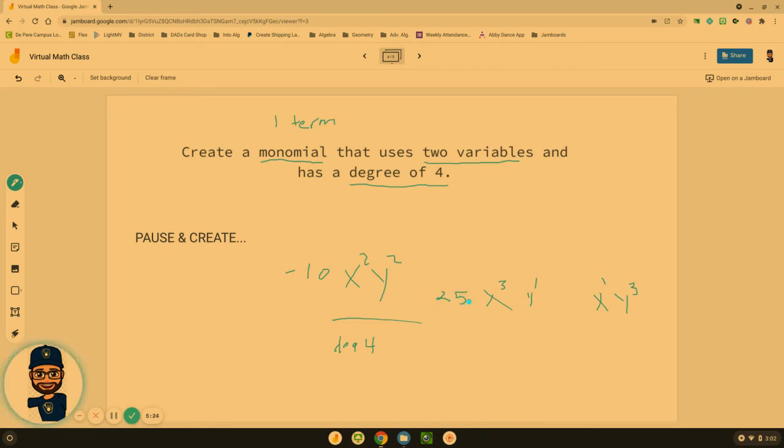What we cannot have is like x⁰y⁴ because that means we don't actually have two variables. This piece right here doesn't count as a variable if it's raised to the zero power. So we were looking for something like x²y² or something x³y¹ or something x¹y³.